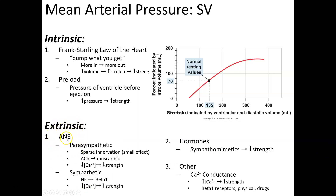Extrinsically, for the ANS and stroke volume: the parasympathetic system does go to the ventricles, releasing acetylcholine to muscarinic receptors, which decreases calcium concentration into the cardiac muscle cell. With less calcium, there's less strength of contraction, so the parasympathetic decreases stroke volume. However, it doesn't play a huge role — likely because excessive parasympathetic stimulation could stop the heart or weaken contractions enough to prevent effective blood pumping.